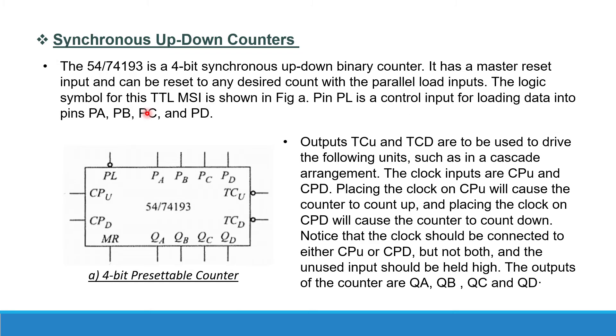Now, we move forward towards the synchronous up-down counters. The 54/74193 is a 4-bit synchronous up-down binary counter. It has a master reset input and can be reset to any desired count with the parallel inputs.